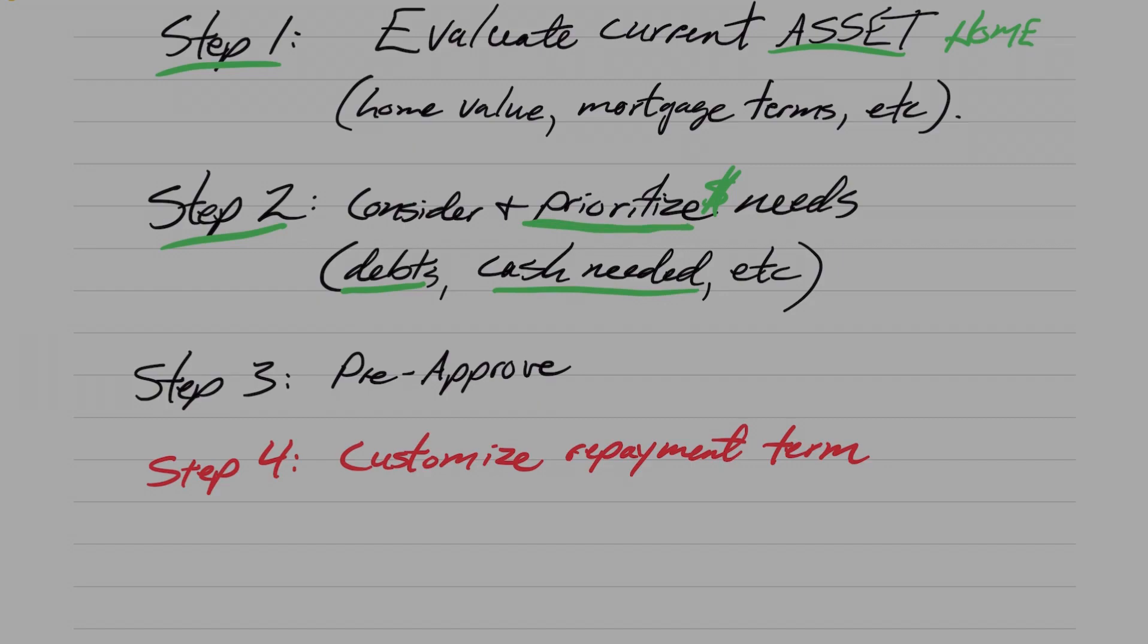So I always talk about doing priorities A, B, and C. What is, if you can't have everything, but you could only get one thing, what would that be? What debt would you pay off? How much money would you get? And then, in a next, in a perfect scenario, how much would you get? And then anything in between. So you want to prioritize where you want to allocate any extra additional cash that you get from doing the cash out refinance.